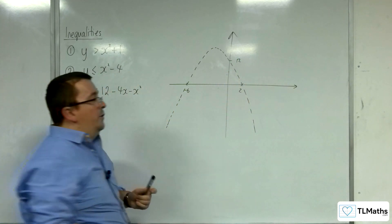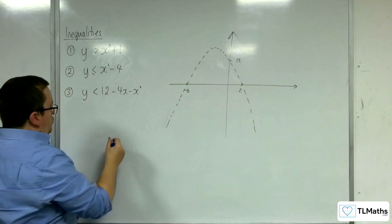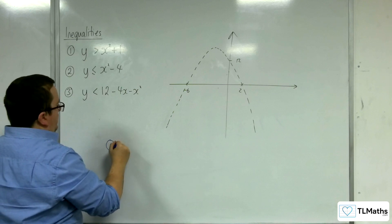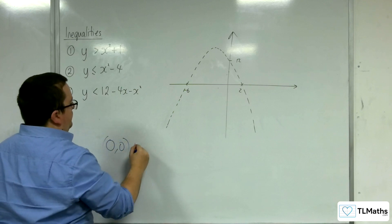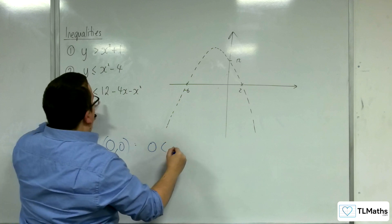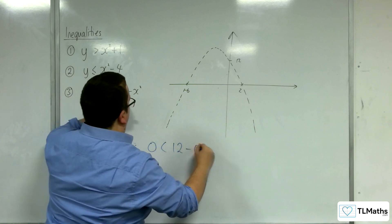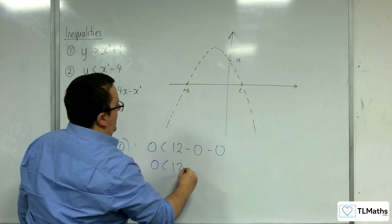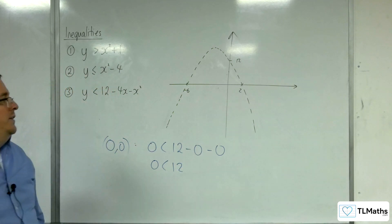So, let's choose a point that's not on the curve. So, let's try zero, zero as usual. So, zero, zero. We get zero is less than 12 take away zero take away zero. So, is zero less than 12? Well, yes, it is.